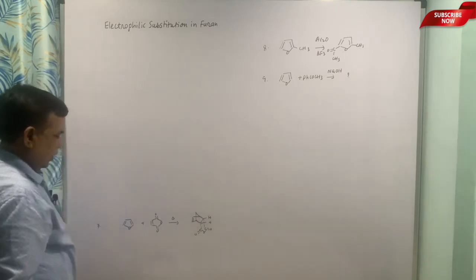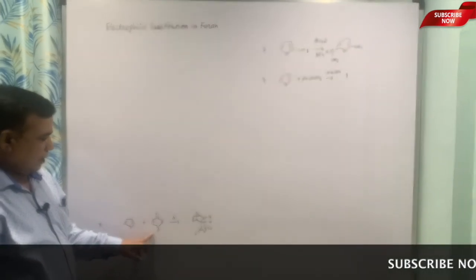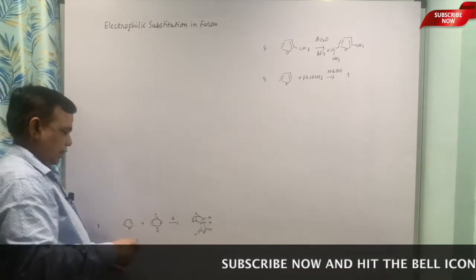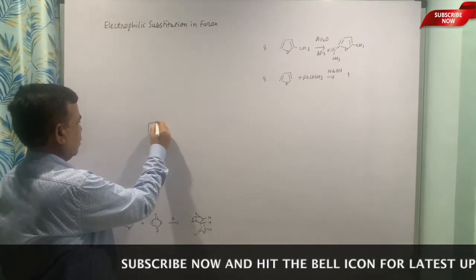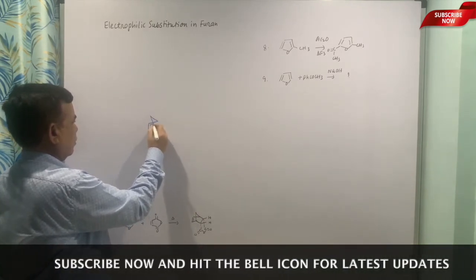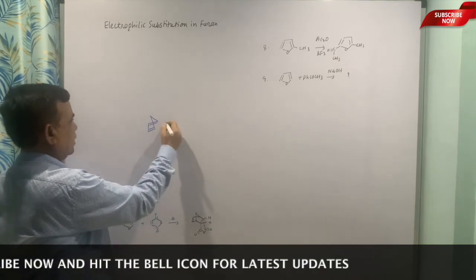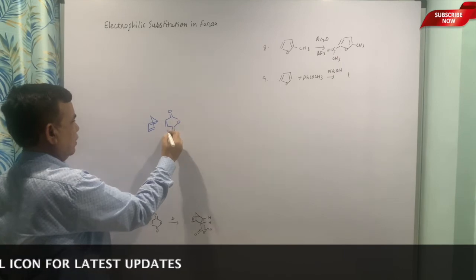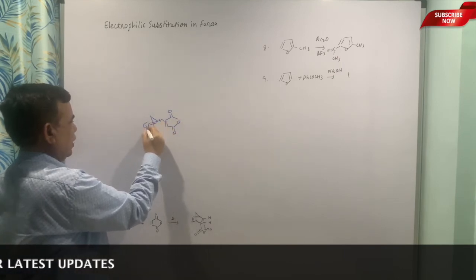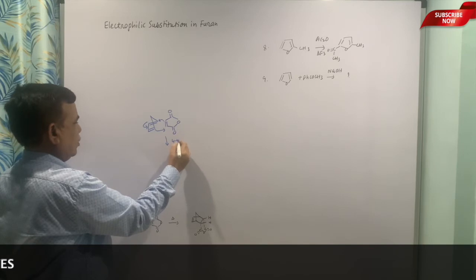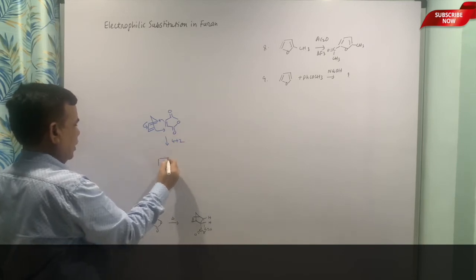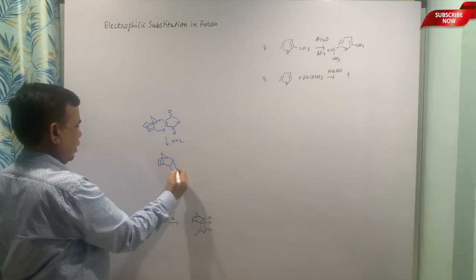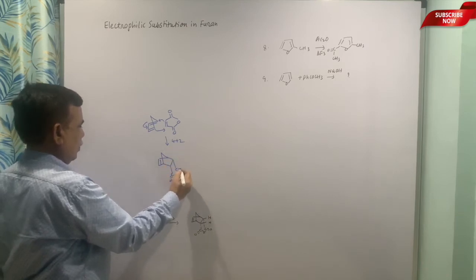The next example is this: furan and maleic anhydride. So it is the Diels-Alder reaction. Furan can be written like this, and then it is a matter of adding—like it is 4+2 cycloaddition.